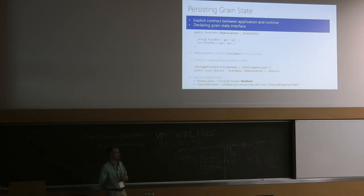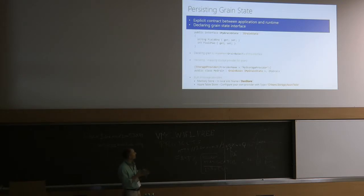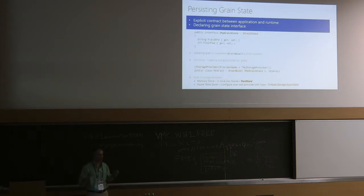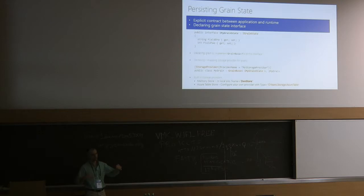You're not forced to use the declarative persistence model — you can completely ignore it. But if you choose to use it, you're not constrained to using only the state interface. You annotate your class with the StorageProvider attribute, specifying a string name defined in config. This makes it configuration-driven — for example, you can have different storage accounts for development, testing, and production without hardcoding.